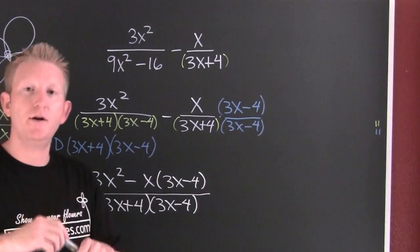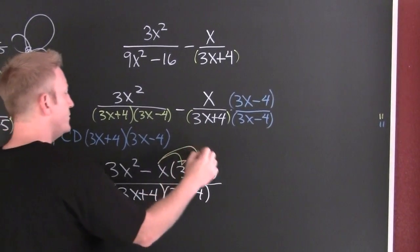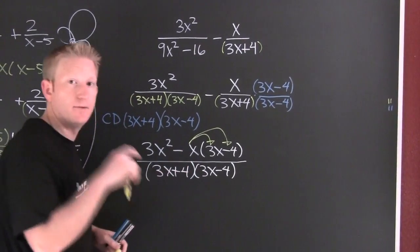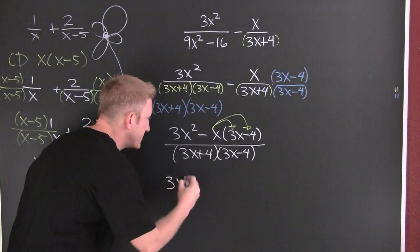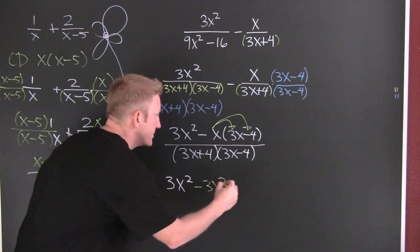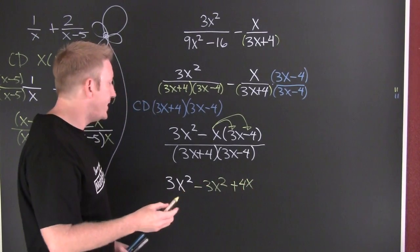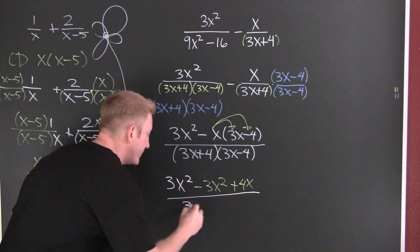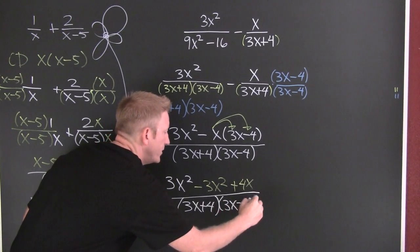But wait, there's more. Finish him. And don't forget to take that minus x along with it. So then this is 3x squared, and then the minus x times the 3 is minus 3x squared, and the minus x times the 4 is plus 4x. That's all over the common denominator of 3x plus 4 times 3x minus 4.